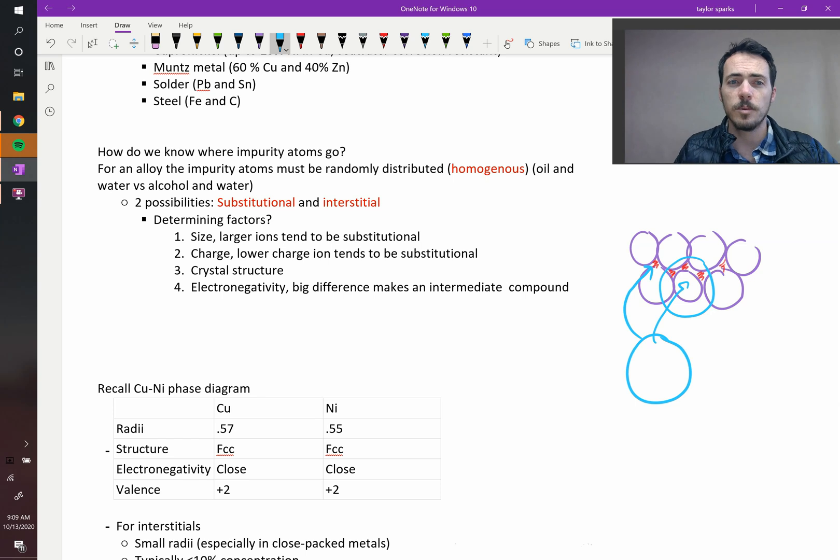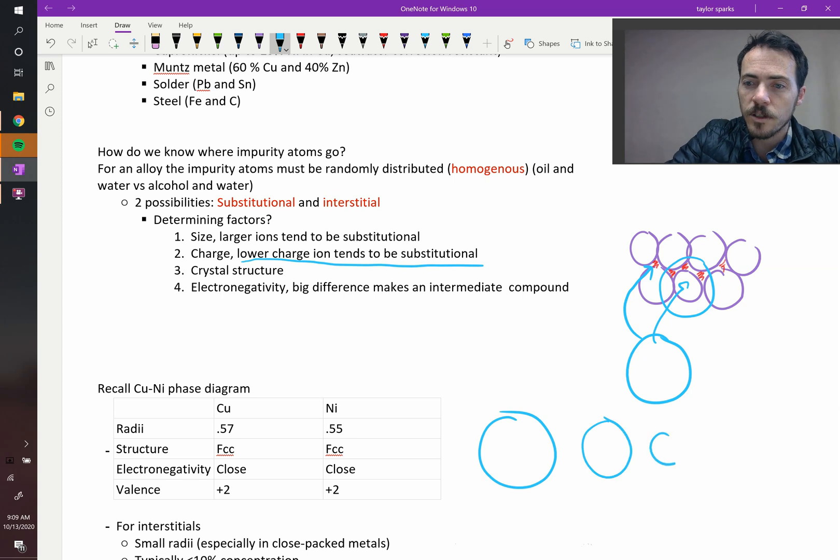Now, the same thing is with charge. It says here, lower charge ions tend to be substitutional. What do we know about that? Well, as you go from the pure atom, let's say the pure atom is this big, when you go to one plus it gets smaller, two plus it gets smaller, three plus it gets even smaller. One plus, two plus, three plus, it's getting smaller and smaller as you increase the oxidation state.